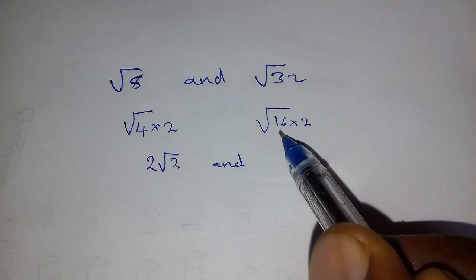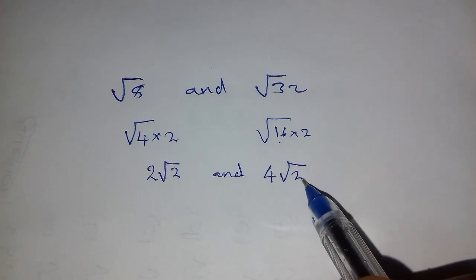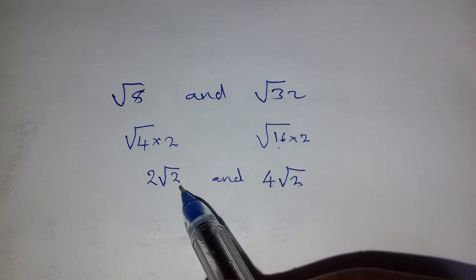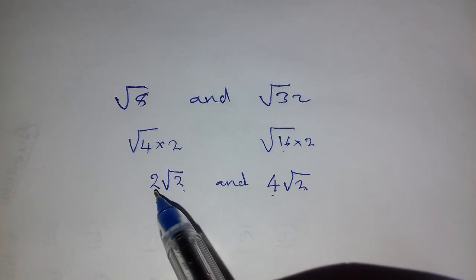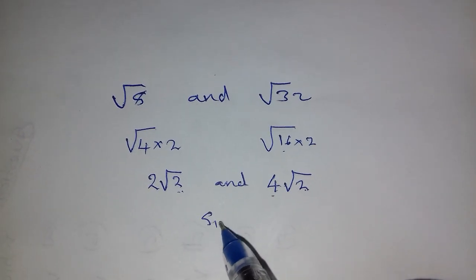And the square root of 16? 4. And what remains inside the square root? 2. Now let's check. We have 2 and 2, these are radicands. Despite them having different coefficients, provided the radicand is the same, they are similar.